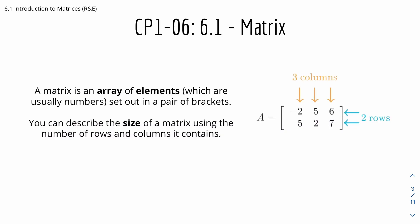Here we have matrix. A matrix is an array of elements which are usually numbers or algebra in this case if we are dealing with some unknowns, set out in a pair of brackets. You can describe the size of a matrix using the number of rows and columns it contains. So here's an example matrix right here. Rows are the ones going horizontally and columns are the ones going vertically. From here we can see that there are 2 rows and 3 columns, so the size of matrix A could be described as 2 by 3 like so.